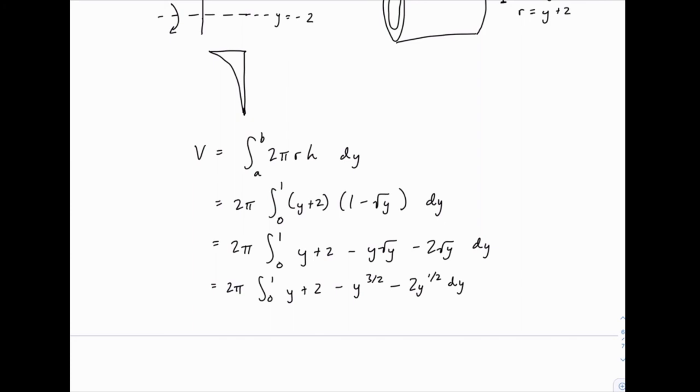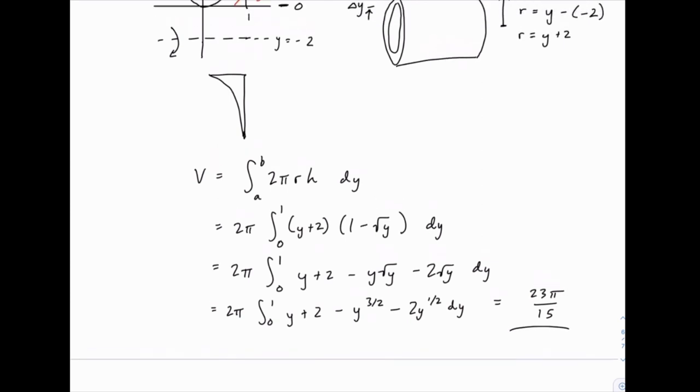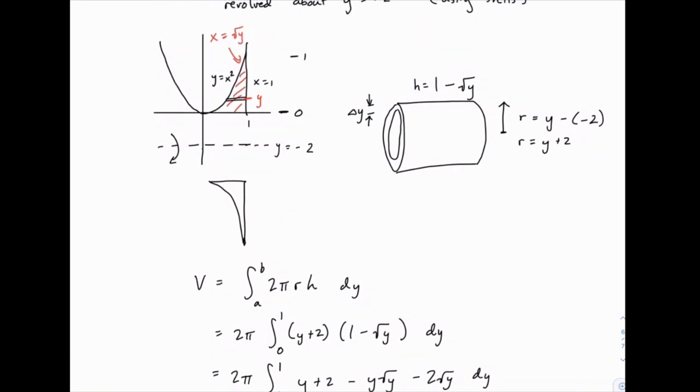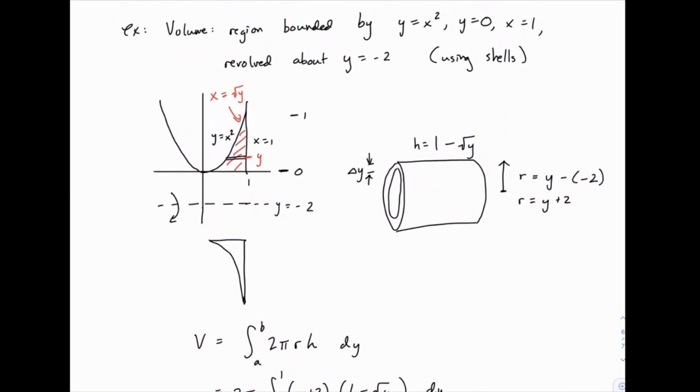And for sake of time, I won't show all the steps there. But the final answer you get should be 23 pi over 15. And I would recommend you go through and make sure you can work that out just to check yourself on the level of detail. But the key to these problems is always the setup. And with this one, with shells, the setup basically boils down to finding the values for r and h. If you can do that reliably, everything else is just a matter of being careful and consistent.